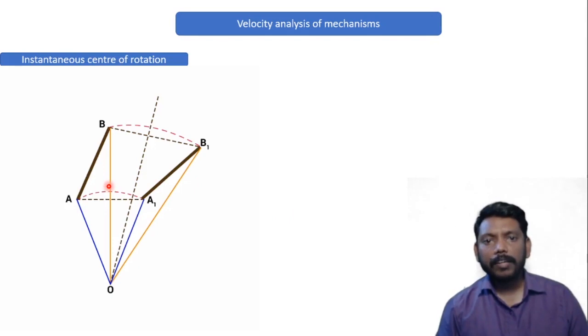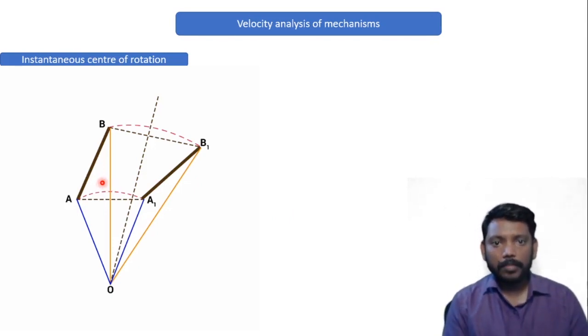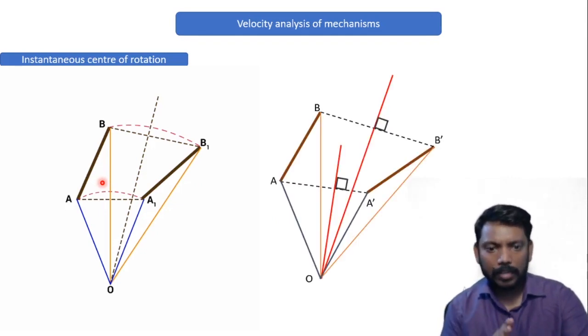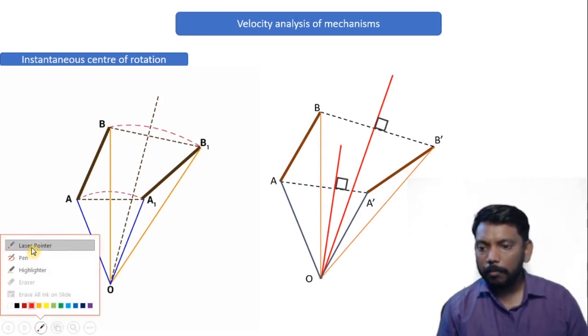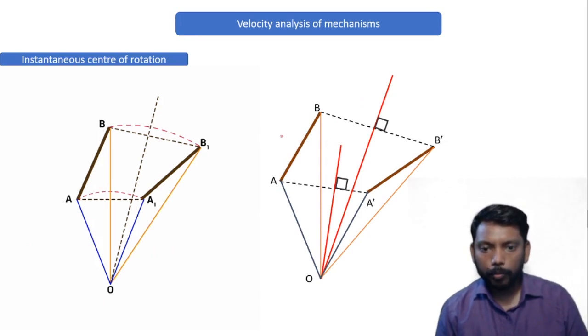So this is how the final animation will look. Now, ICR ko aur detail mein samajhne ke liye, hum log aur ek motion karate hai, same mechanism ka. So final mechanism kuch is tarike se tha. This was your position number 1 and this was your position number 2.